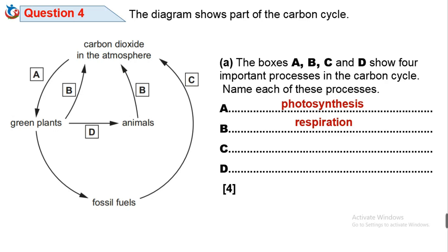C is the process by which fossil fuels are utilized to produce carbon dioxide waste. Therefore C is called combustion or burning. This has to do with the use of fossil fuels — burning fossil fuels to produce carbon dioxide waste.